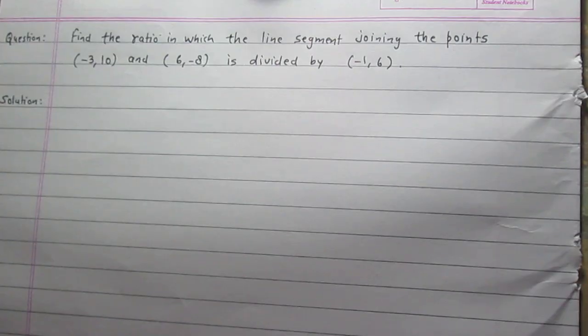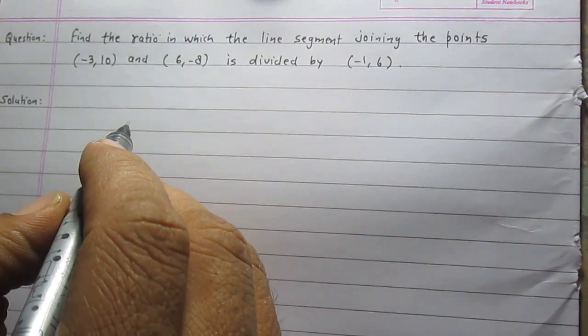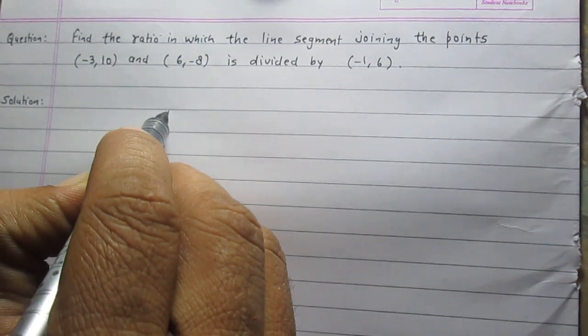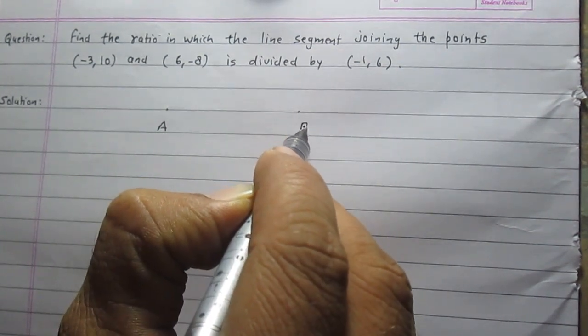In this question, we are given three points. Out of these three points, two points are the endpoints of a line segment. Let us consider these two points are point A and point B.